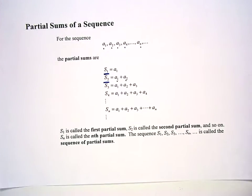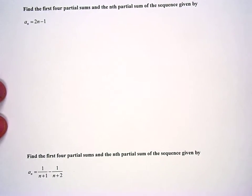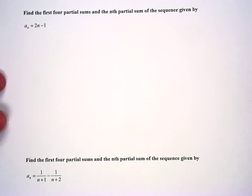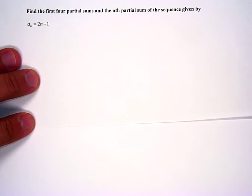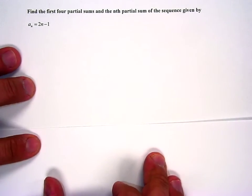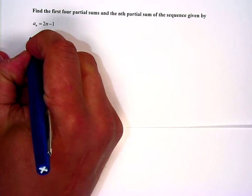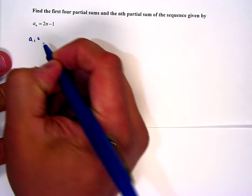So we're going to do a couple of these problems here. Let me just get an equation here, or a sequence. It says, find the first four partial sums and the nth partial sum of the sequence given by a sub n equals 2n minus 1. Well, the first thing we want to do is we want to figure out the first four terms.